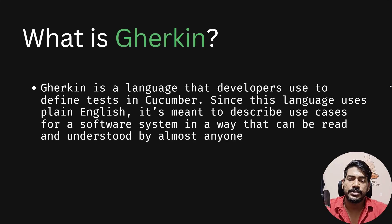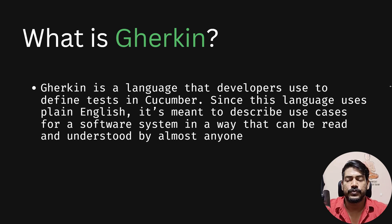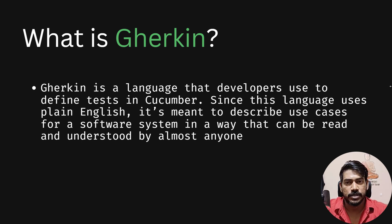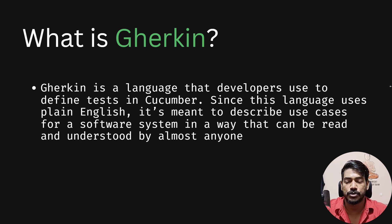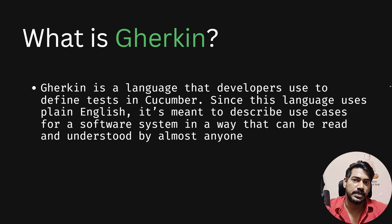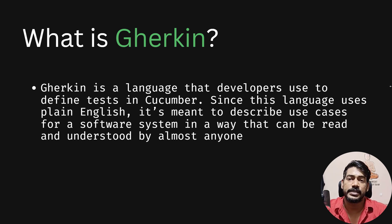So what is Gherkin? It's a language that developers use to define tests in Cucumber. Since it uses plain English, it describes use cases for a software system in a way that almost anyone can read and understand. For example, take a login scenario where we enter username and password, do the login, and verify the user logged in successfully. In Selenium we inspect fields, use sendKeys and click actions, and assert based on URL or a welcome message. But in Gherkin style, we say in plain English: 'User has entered the username as admin', 'User has entered the password as pass123', 'User has clicked the login button', then 'User will be logged in successfully'.